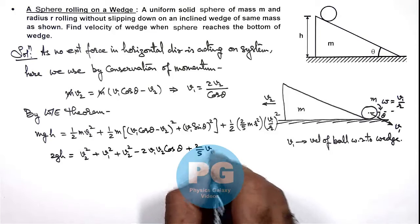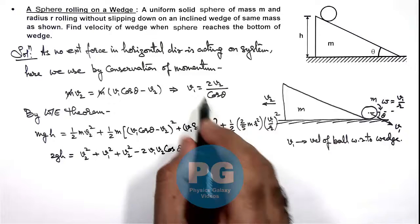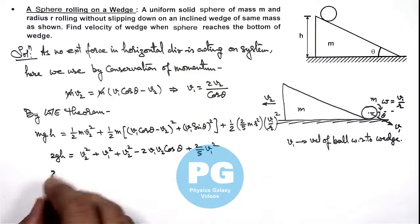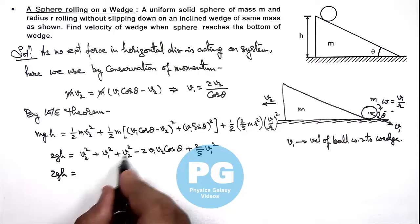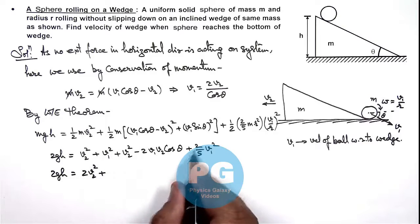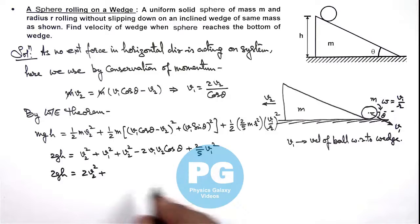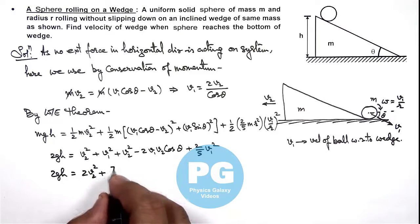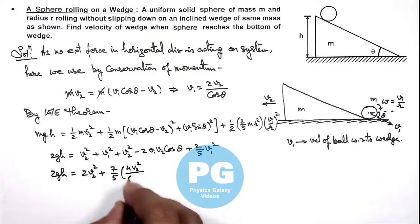2 by 5 v1 square. And now for v1 we can substitute the value in terms of v2 from this equation. This gives us 2gh is equal to, here this will be 2v2 square plus v2 square, plus v1 square plus 2 by 5 v1 square we can write as 7 by 5 v1 square. So this is 7 by 5 and v1 square we can write as 4v2 square divided by cos square theta.